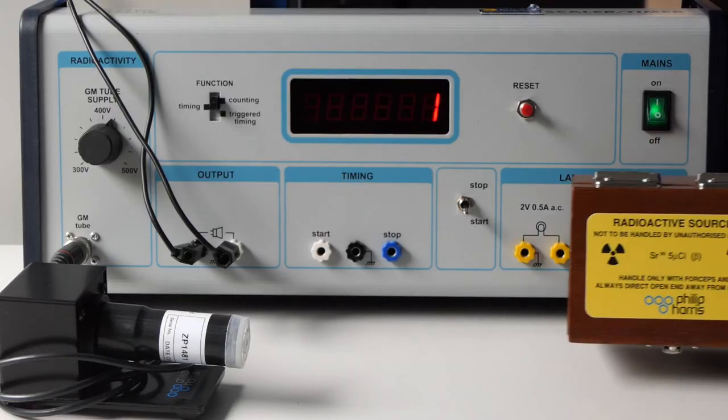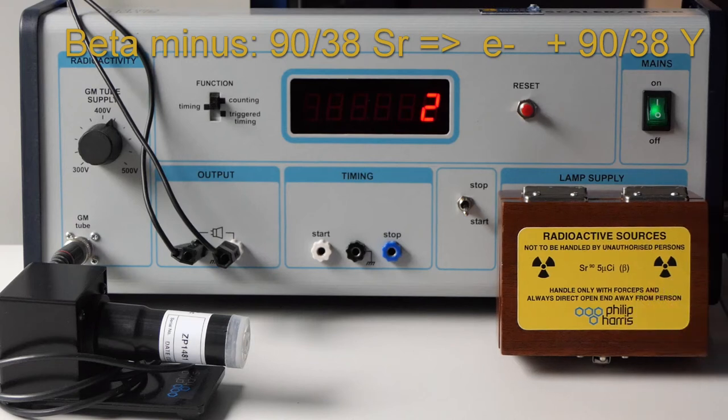Now we'll move to beta radiation using a strontium-90 source.